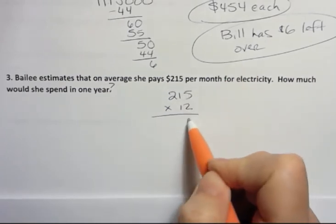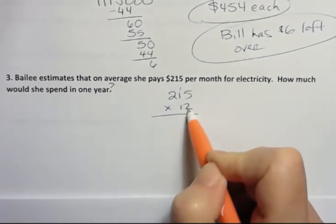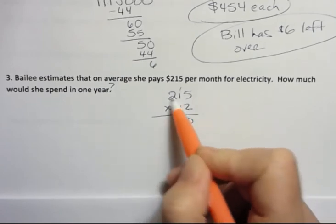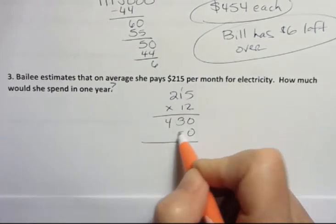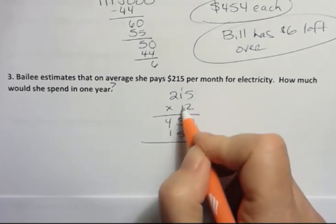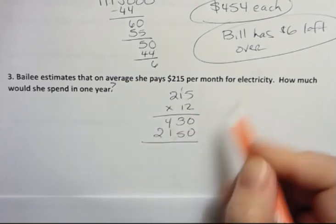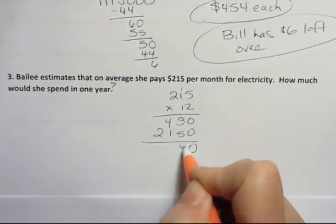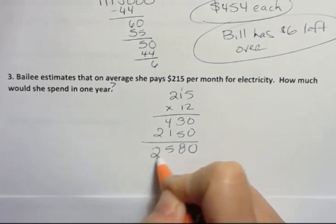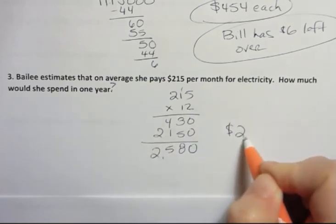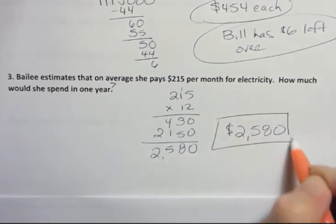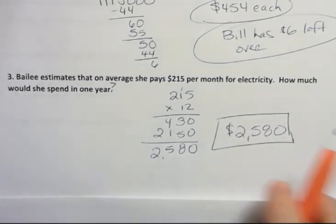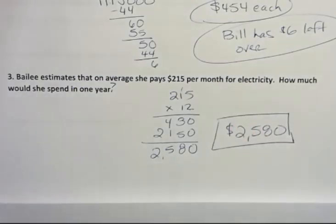Two times five is 10. One times two is two, plus one is three. And two times two is four. Put a zero. One times five. One times one. And one times two. If we add those up we get $2,580. And that's the amount that she spends in a typical year on electricity. Have a fantastic day.